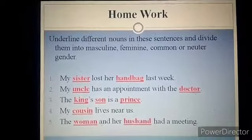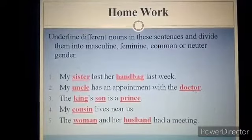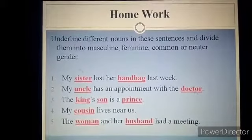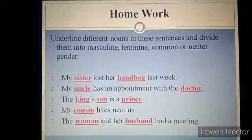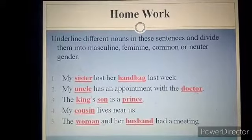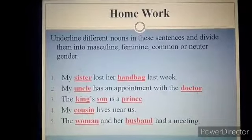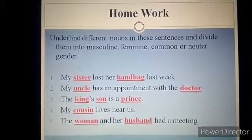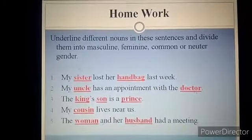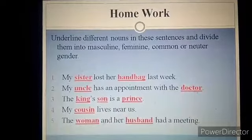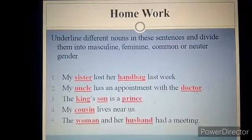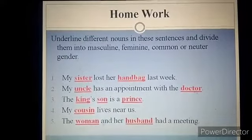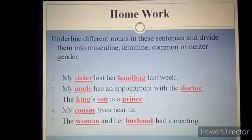Look at the third sentence: 'The king's son is a prince.' Here the words king, son, and prince are nouns. The word king is masculine because it has its feminine form, queen. The word son is masculine because it has its feminine form, daughter. The word prince is also masculine because it has its feminine form, princess.